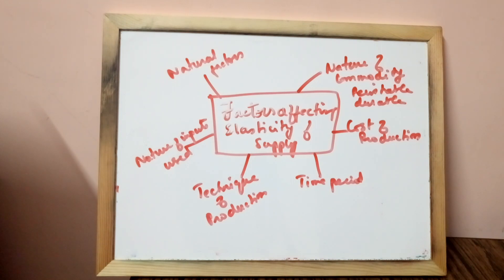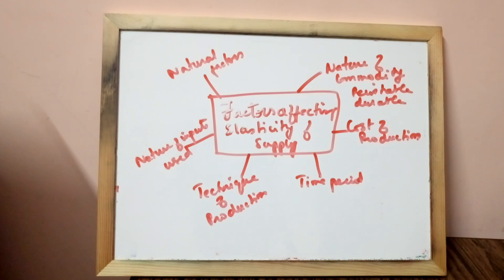Next one: technique of production. Supply is generally elastic for commodities which involve simple techniques of production. However, supply is inelastic for commodities which involve complex techniques of production. Output of such goods cannot be easily increased with increase in prices because of the technology involved, as you cannot suddenly change the technology while the process of production is going on.